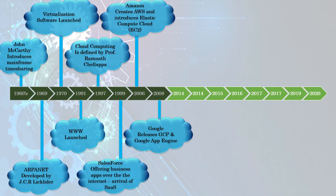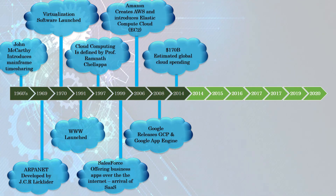Since the announcement of App Engine, Google added multiple cloud services to the platform. By 2014, the global cloud spending was estimated at $170 billion.